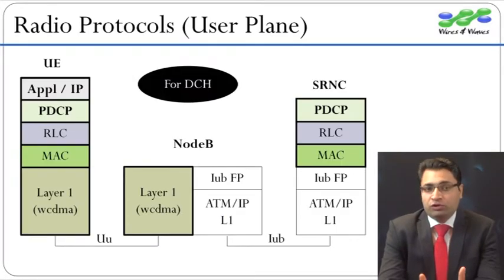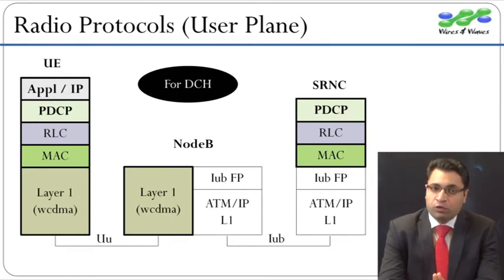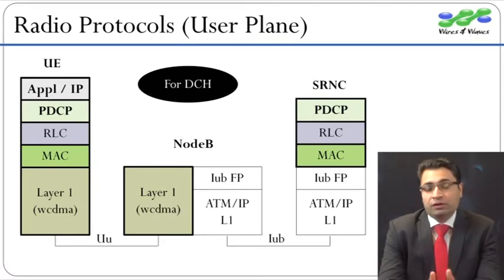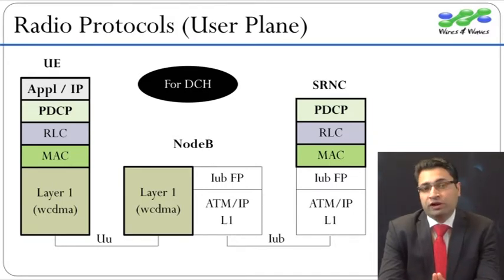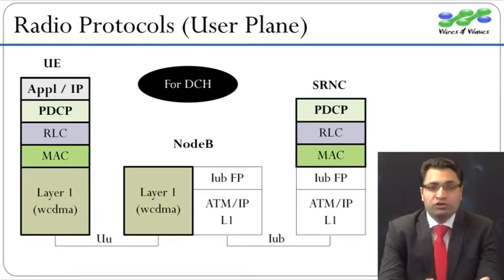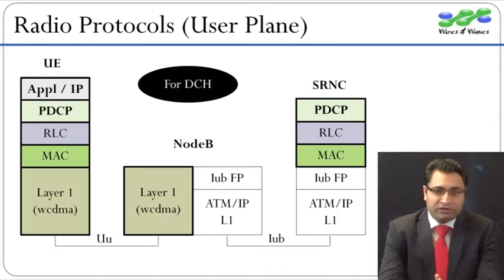Other than these protocols for fixed interfaces, we also have radio protocols which describe the communication between UE and RNC. Let us have a look at user plane radio protocols and try to understand how user traffic travels between UE and RNC. User plane could be anything like voice, video, streaming, FTP file transfer, web browsing, or any multimedia application data.